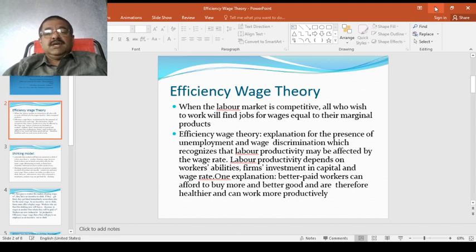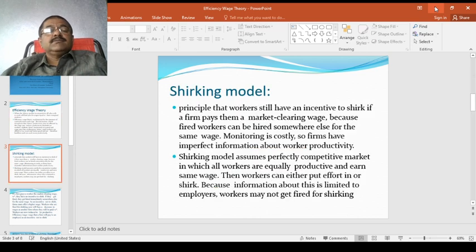Efficiency theory explains the presence of unemployment and wage discrimination, which recognizes that labor productivity may be affected by the wage rate. Labor productivity depends upon workers' abilities, firms' investment in capital, and wage rate. One explanation: better paid workers can afford to buy more and better goods and are therefore healthier and can work more productively. This is what a producer is going to think about.